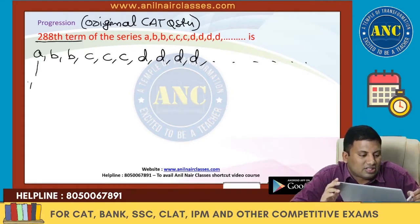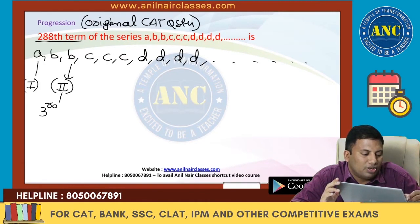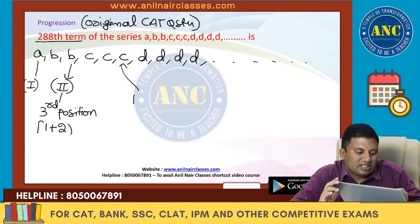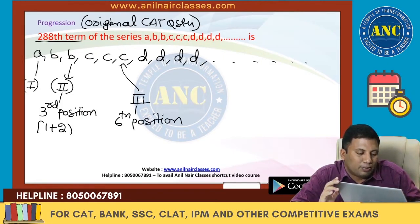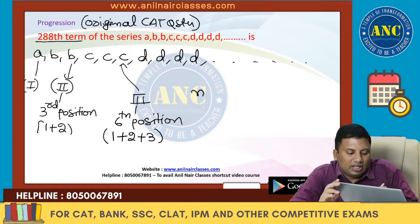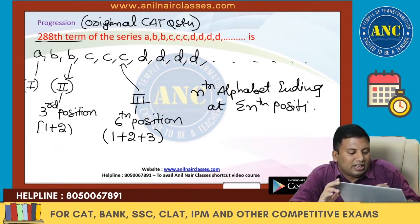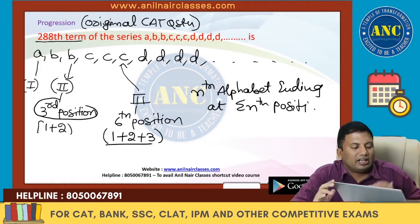If you see here, this is the first alphabet. The second alphabet is in the third position, which is nothing but 1 plus 2. The third alphabet C is in the sixth position, which is 1 plus 2 plus 3. That means the Nth alphabet is ending at the summation of N position — i.e., the triangular number. The third alphabet ends at the sixth position, the second ends at the third.